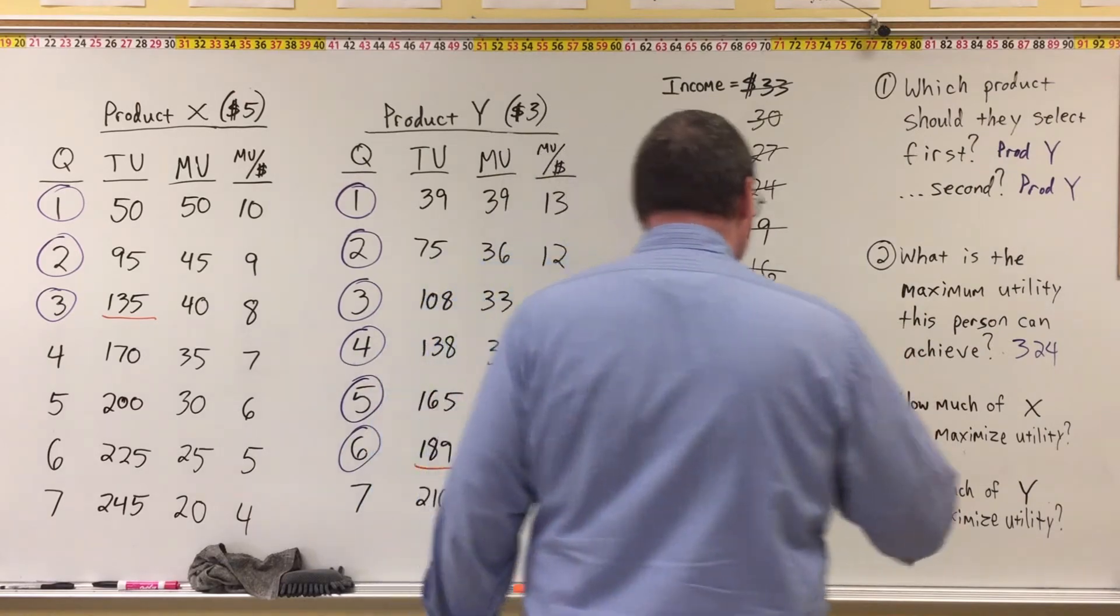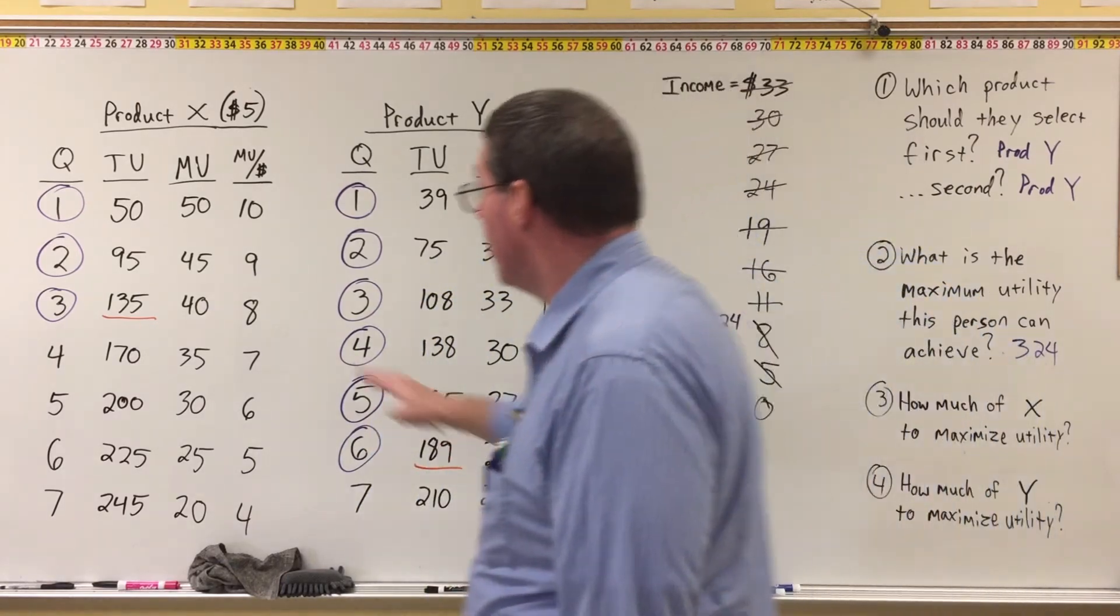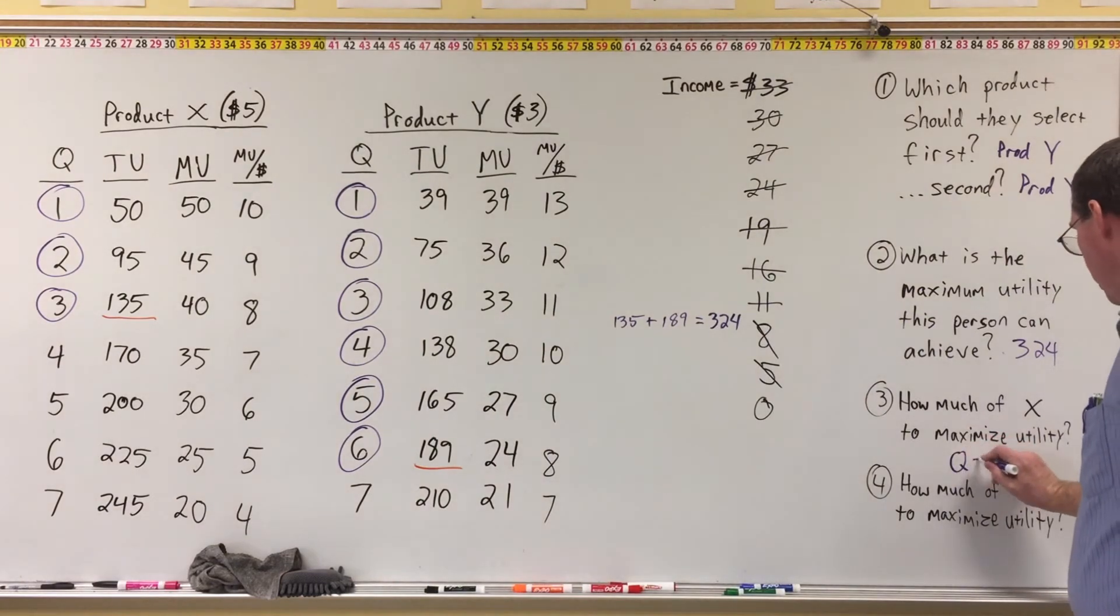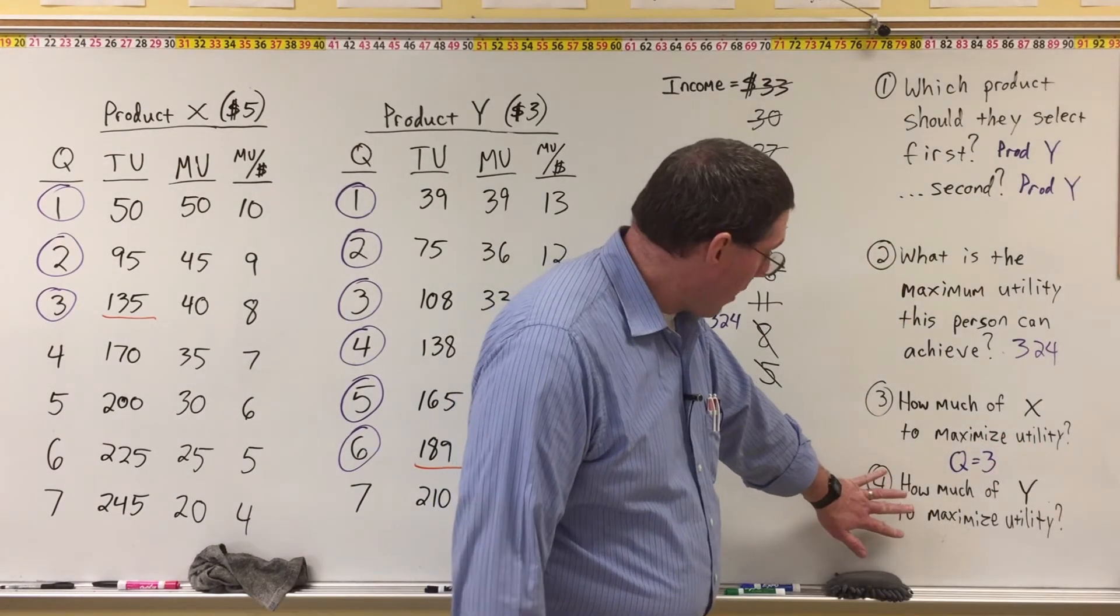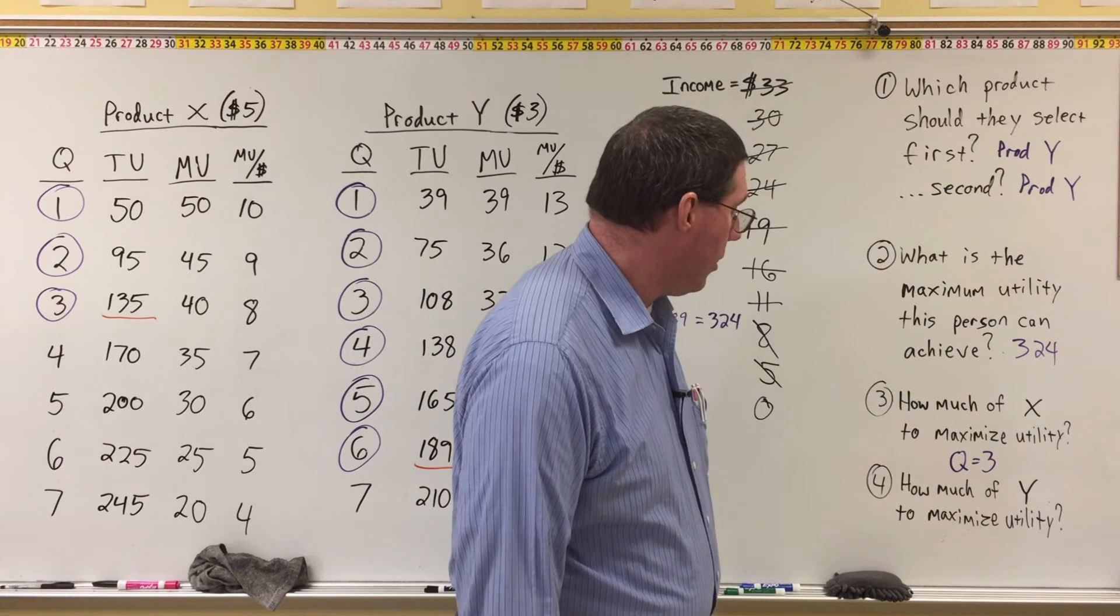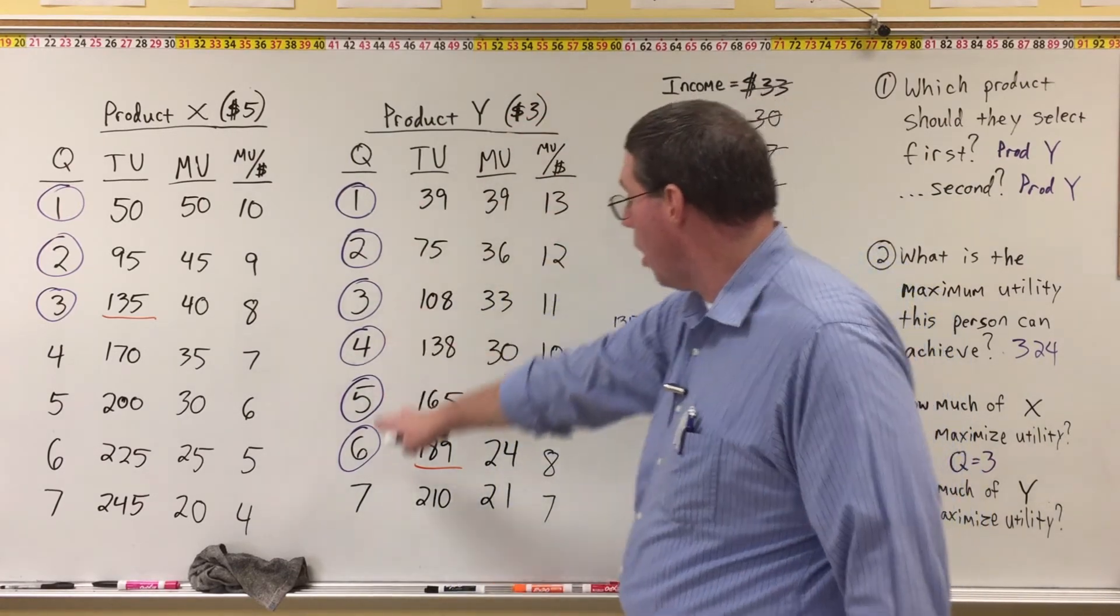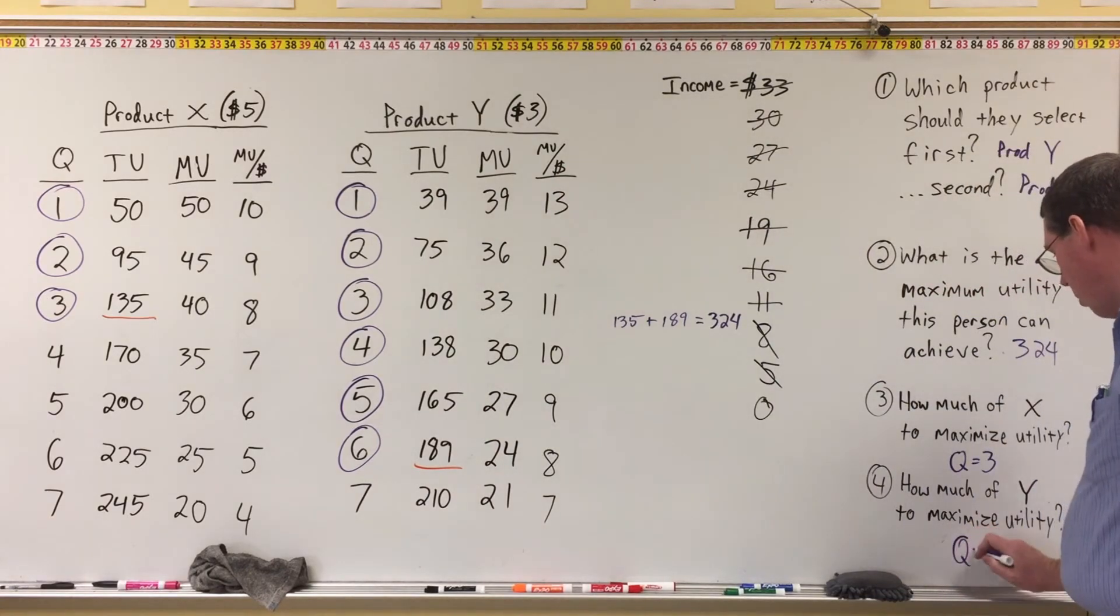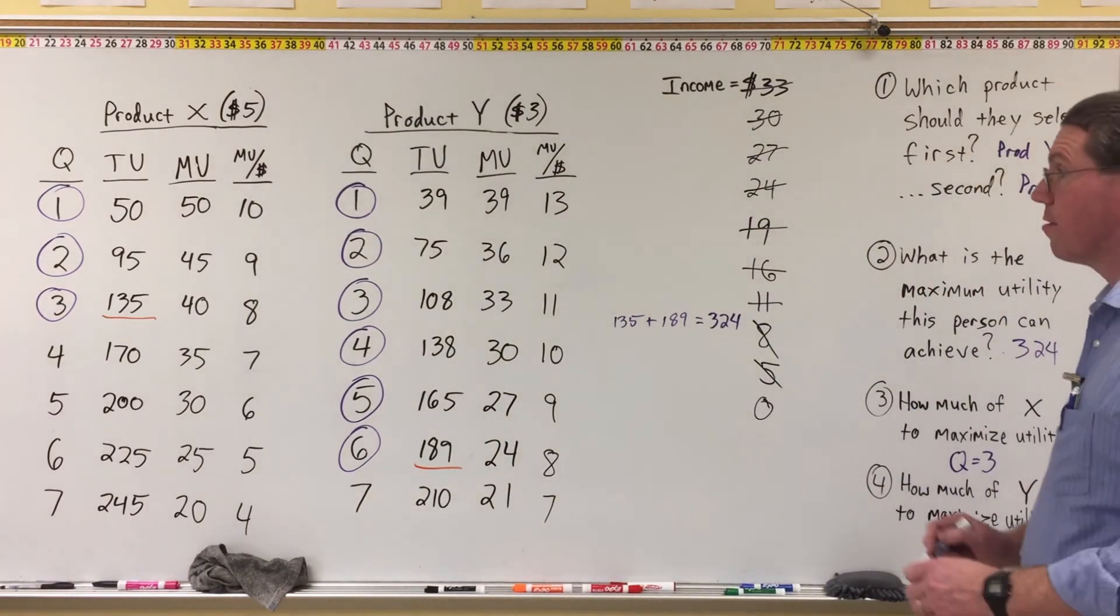How much of X to maximize utility? 3 units. So we'll say Q equals 3. All right, so our last question here, how much of quantity Y to maximize utility? If we go to product Y, you can see we were going to select 6. And therefore, the answer to this is quantity equals 6.